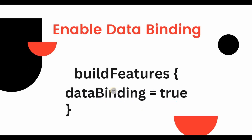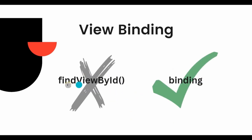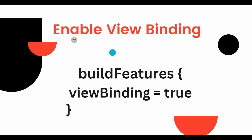Next, what is view binding? View binding is a feature that simplifies the process of interacting with UI components. Basically, it replaces the findViewById method. With findViewById, if we wrote an incorrect ID or didn't initialize it, it would obviously lead to incorrect view type casting or null reference errors.